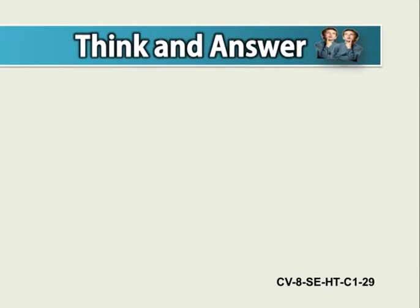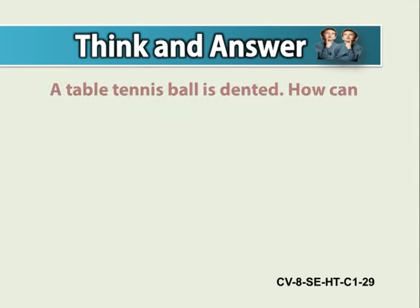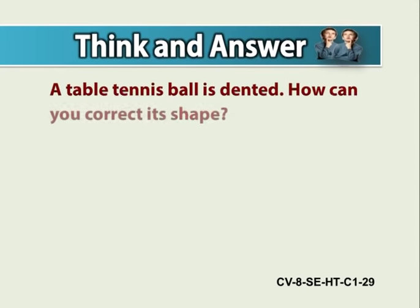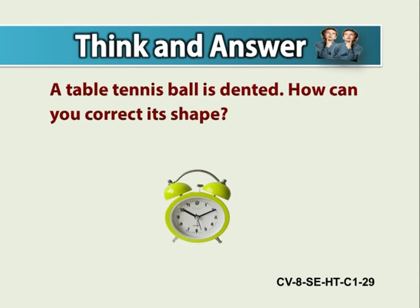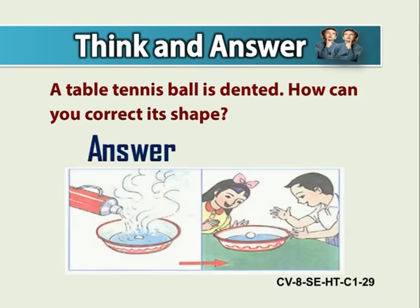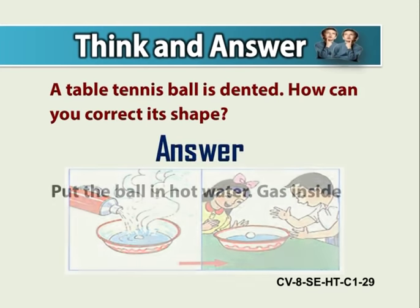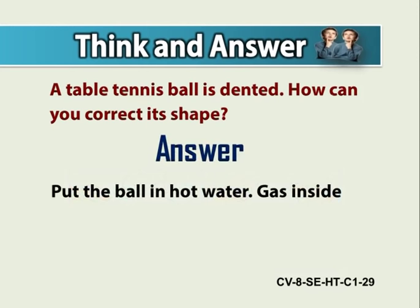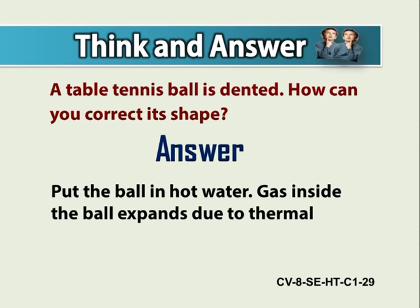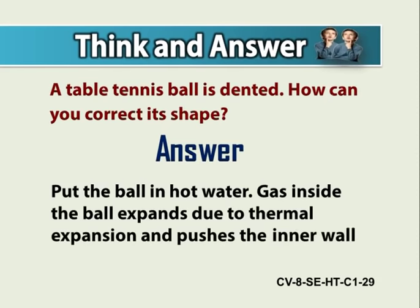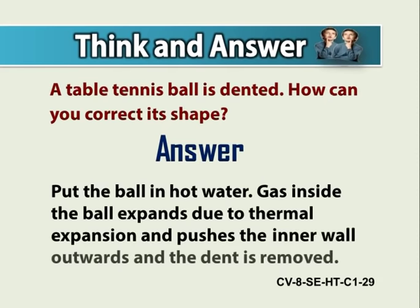Now, think and answer. A table tennis ball is dented. How can you correct its shape? The answer is, put the ball in hot water. The gas inside the ball expands due to thermal expansion and pushes the inner wall outwards and the dent is removed.